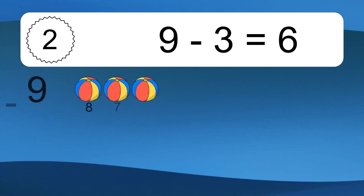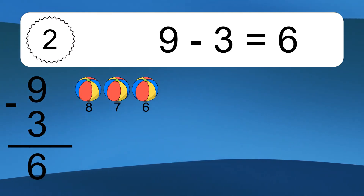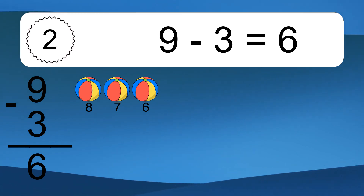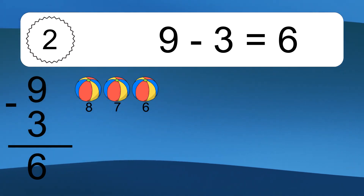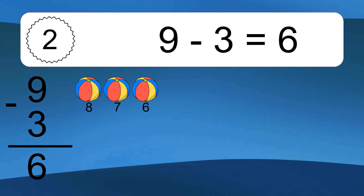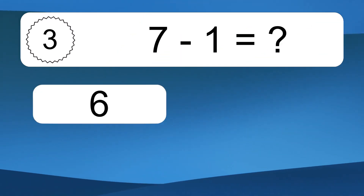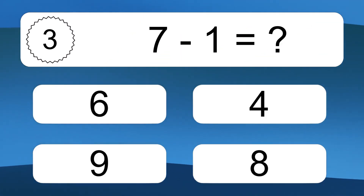9 minus 3 equals what? 9 minus 3 equals 6. Let's count it: 8, 7, 6.